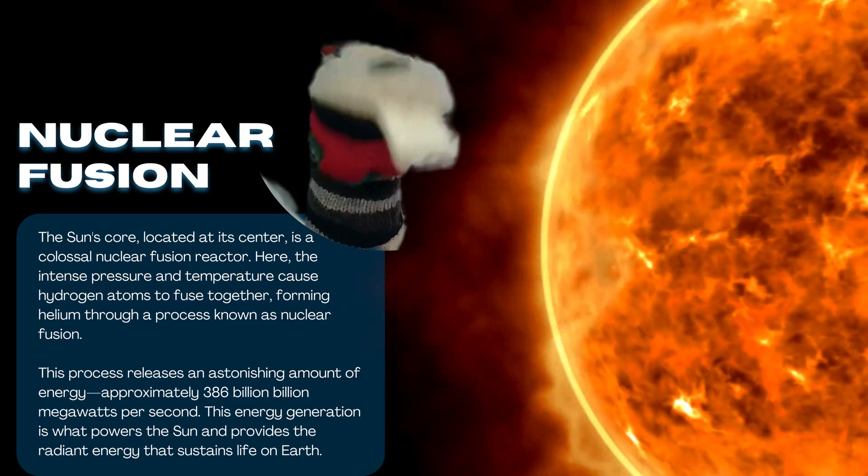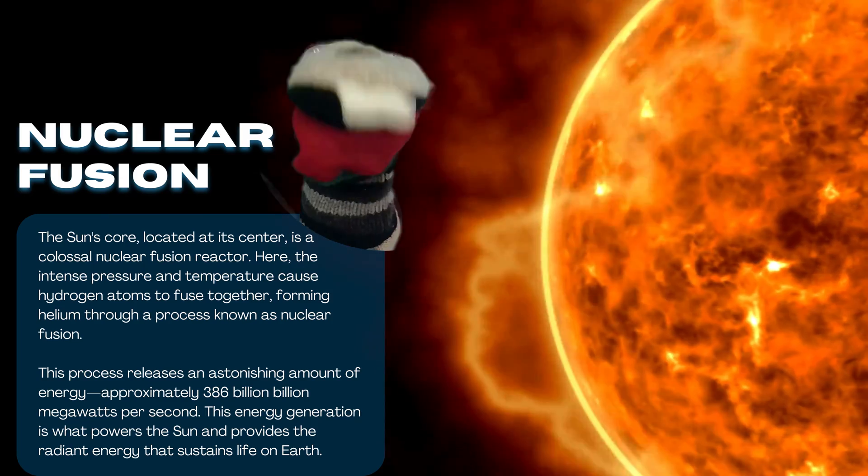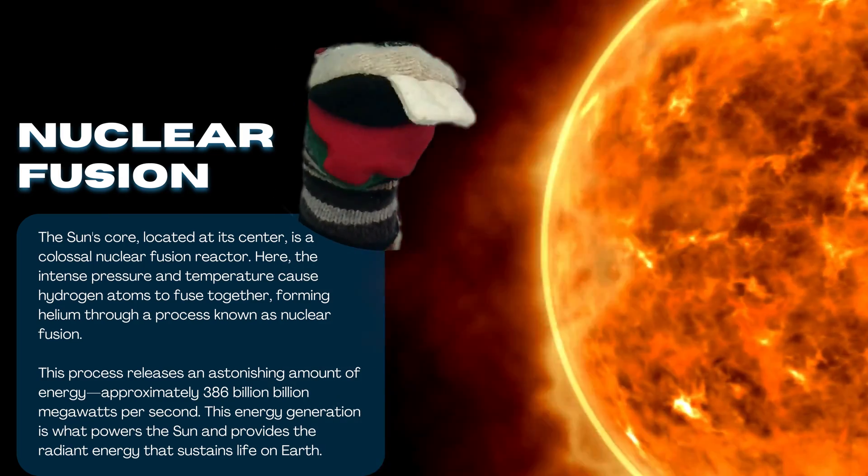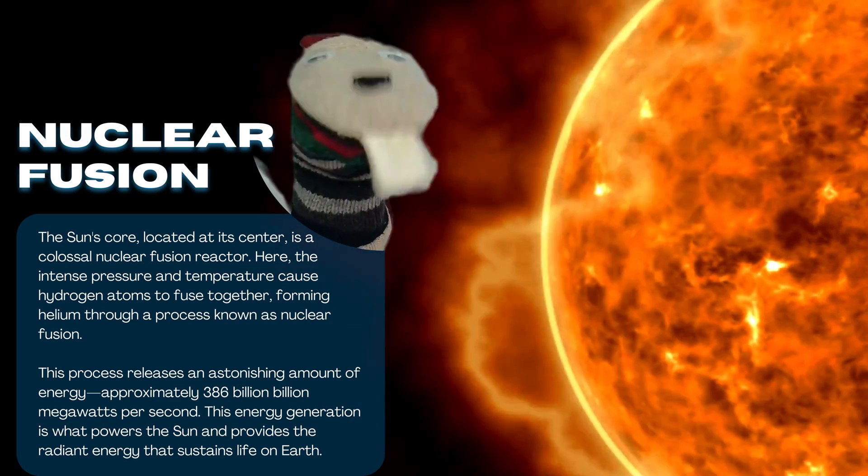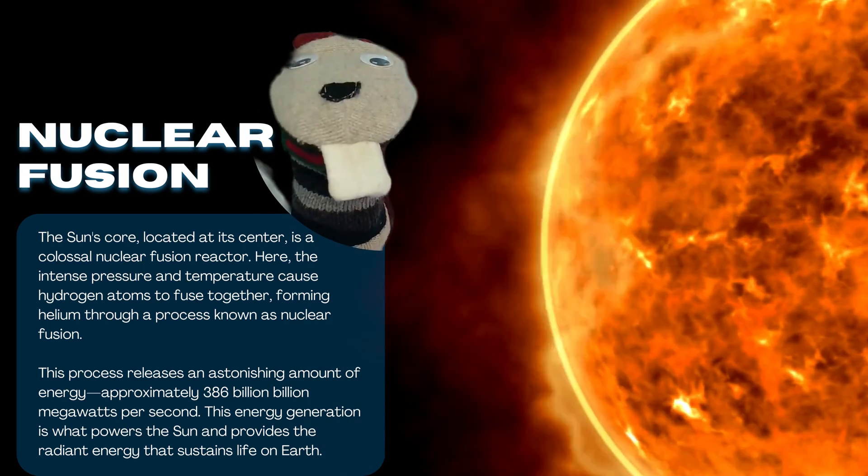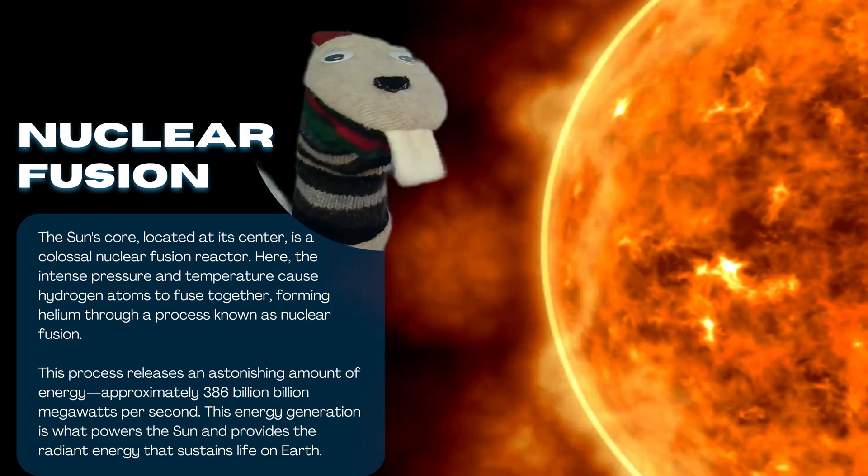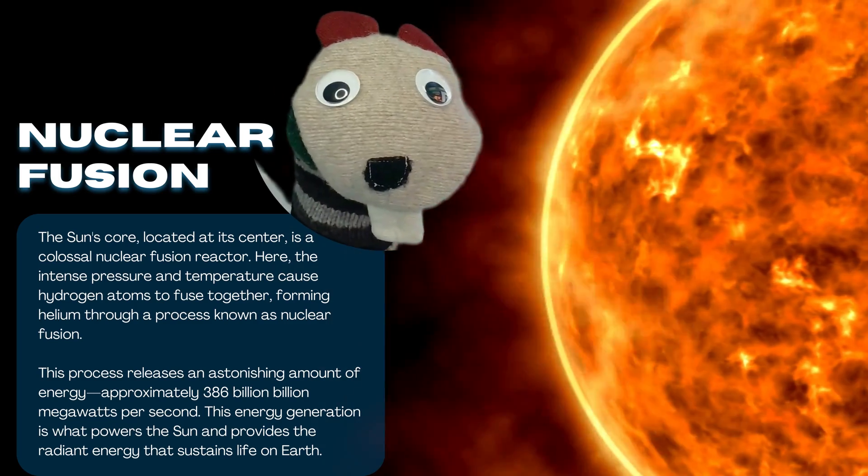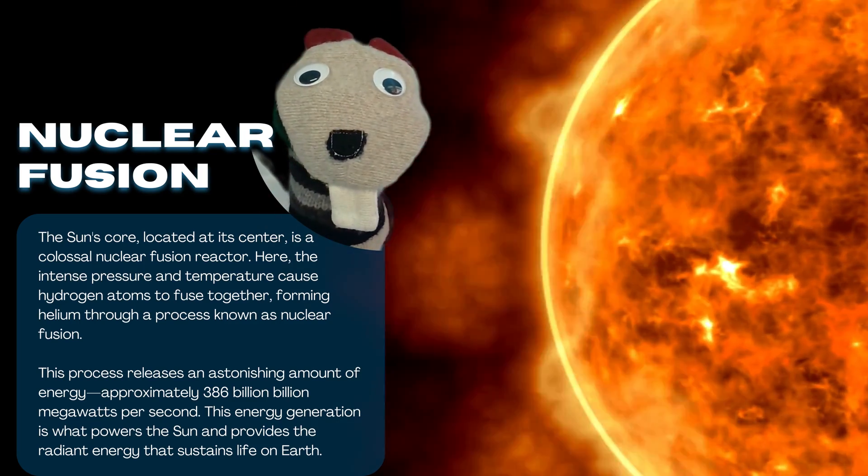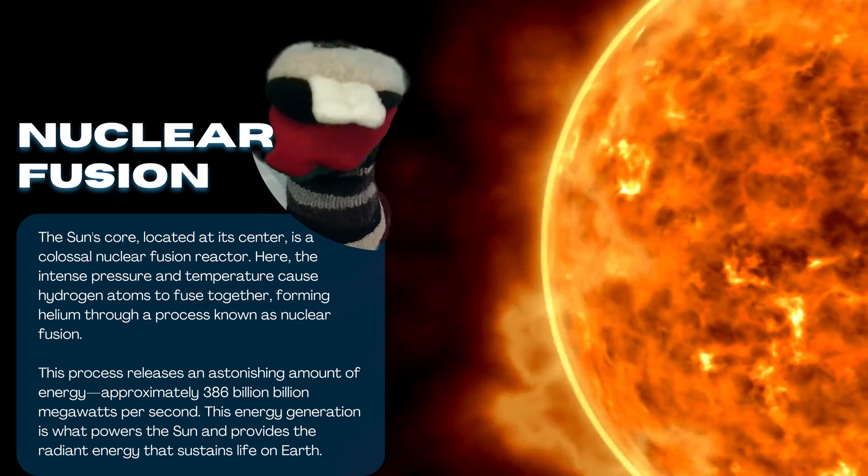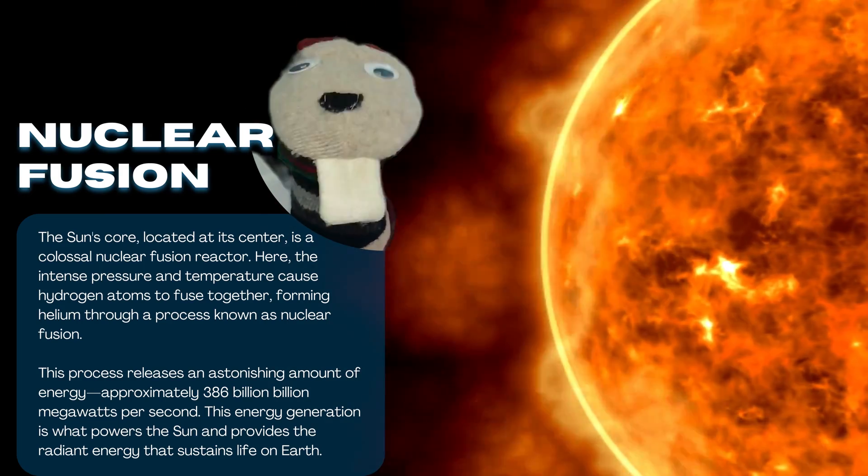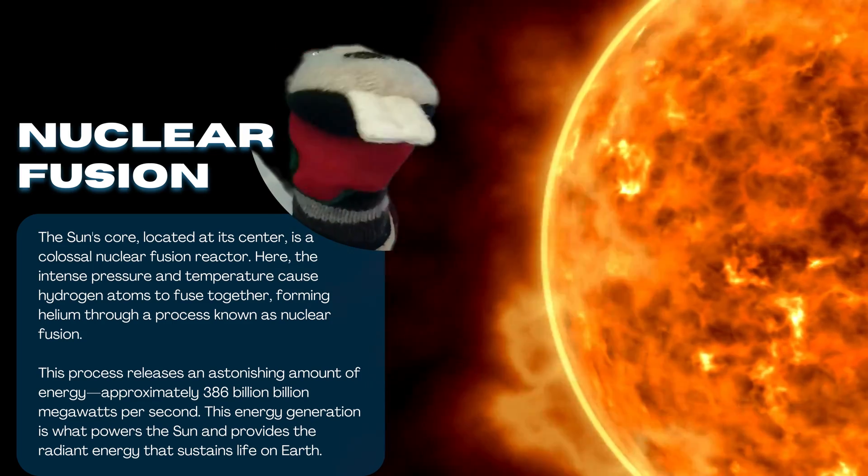So the sun's core, located at its center, is a colossal nuclear fusion reactor. Basically that's where the sun's getting its energy, approximately 360 billion megawatts per second. This energy generation is what powers the sun and provides the radiant energy that sustains life on Earth.